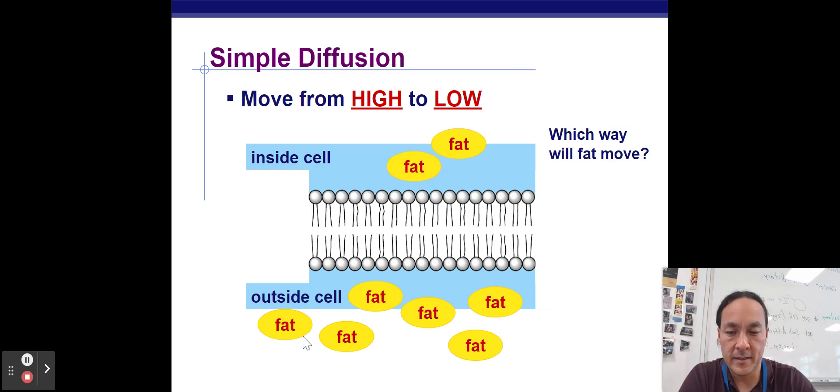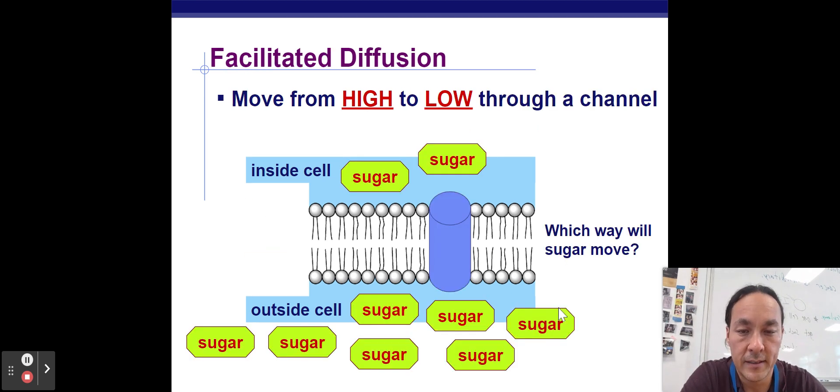Here we got some examples of diffusion. Which way will the fat move? It will go from an area of high concentration. There's one, two, three, four, five, six fats out here, two here. They will move into the cell. Our cells use up fats and sugars and amino acids and stuff to maintain a concentration gradient so that materials come in.